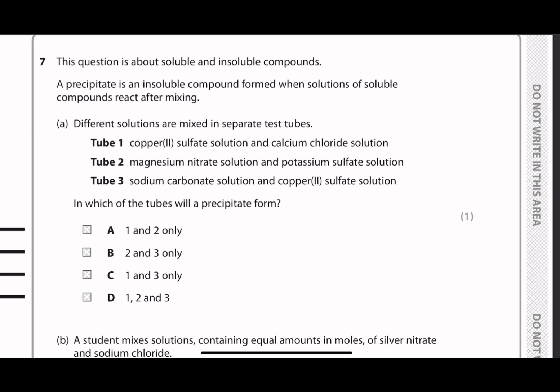This question 7 is about soluble and insoluble compounds. And they give you 3 different test tubes. In tube 1, there's copper sulfate and calcium chloride. So if we write the equation for this reaction, the product will give us calcium sulfate and copper chloride. So calcium sulfate is an insoluble compound. So it will form the precipitate in the solution.